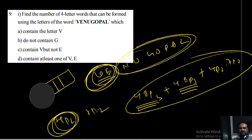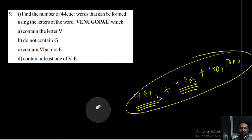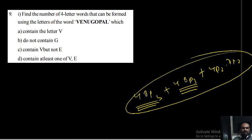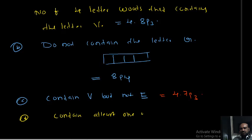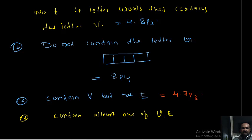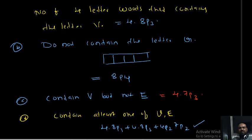Therefore, the number of four-letter words containing at least one of V and E equals four times 8P3 plus four times 8P3 plus 4P2 into 7P2. This is the answer for the problem. I hope you people understood.